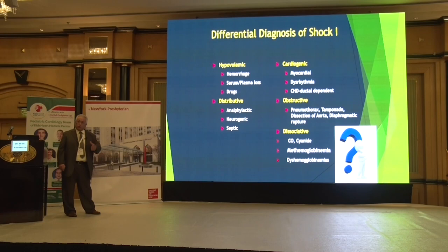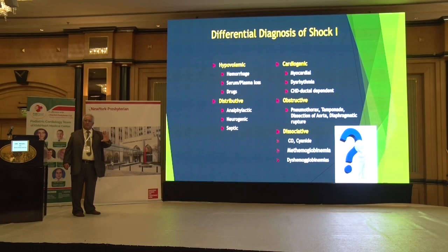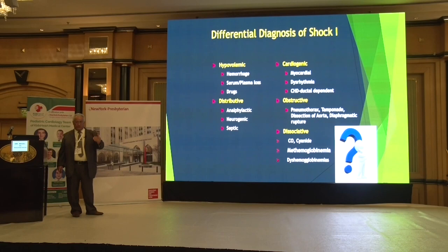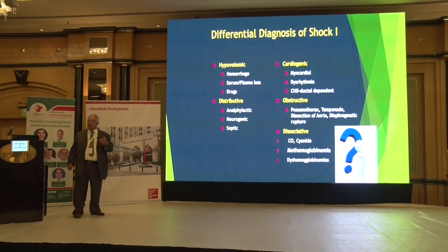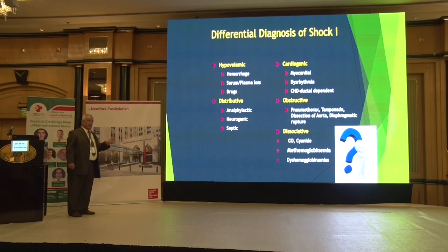The distributive type: unlike hypovolemic where fluid went out of the body, here the fluid is still in the body but went outside the vessels into the interstitial or third space — such as in anaphylaxis, neurogenic shock, and septic shock. Cardiogenic shock can be due to the heart itself, arrhythmias, or ductal-dependent congenital heart disease. Obstructive shock — the nightmare of doctor and patient — includes pneumothorax, tamponade, aortic dissection, and diaphragmatic rupture. The dissociative type: hemoglobin is not carrying oxygen or is not delivering it to the tissues — as in CO poisoning, cyanide poisoning, methemoglobinemia, and dyshemoglobinemias.